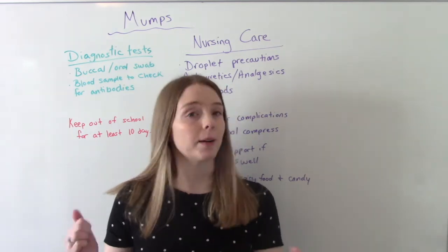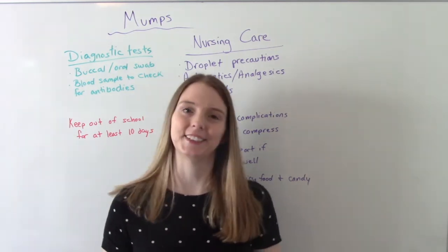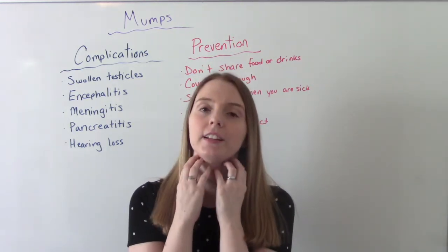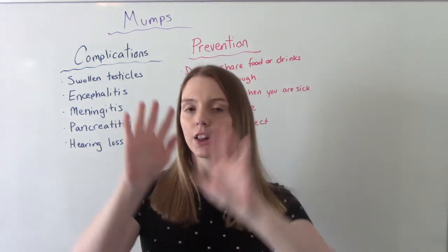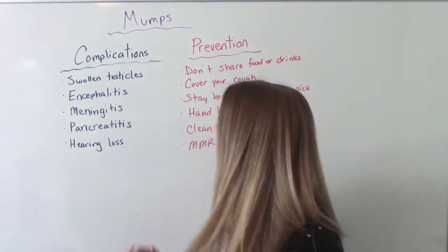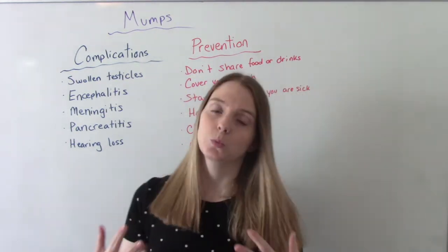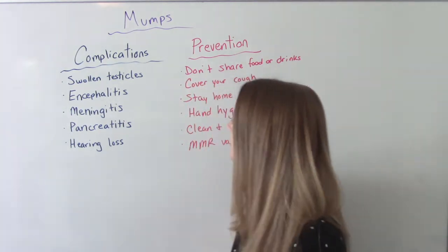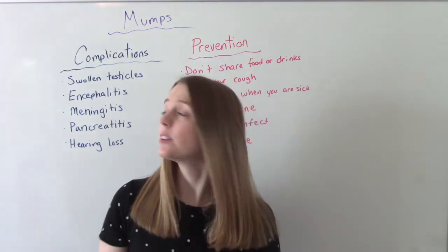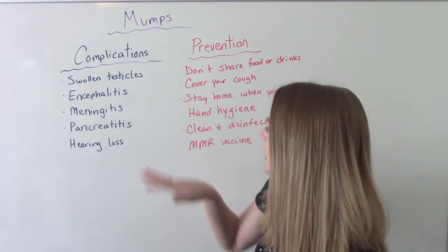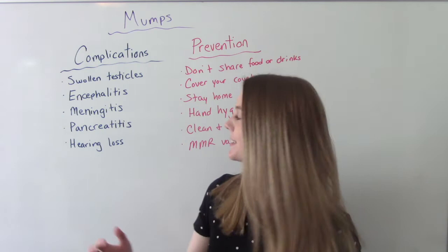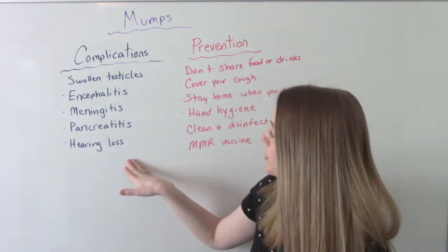Now let's talk about those complications and prevention. The big sign of mumps is the swollen salivary glands, so the inflammation. All of the complications are going to be related to inflammation, just in different parts of the body. Swollen testicles — this could be painful for the patient. Encephalitis — this is swelling in the brain, and this could be life-threatening and deadly. Meningitis — the swelling has affected the central nervous system. Pancreatitis — so the pancreas. And then hearing loss, which is actually the most common complication.